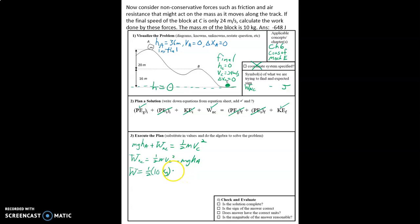But in this case, we are given a mass and we do need it. It was going 24 meters per second when it got to the bottom minus 10 kilograms times 9.8 meters per second squared times a height of 36 meters.